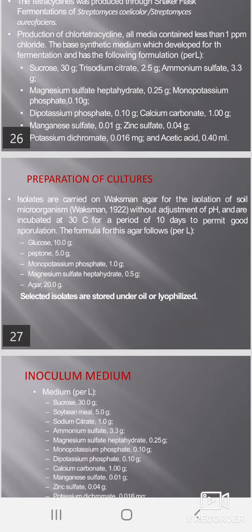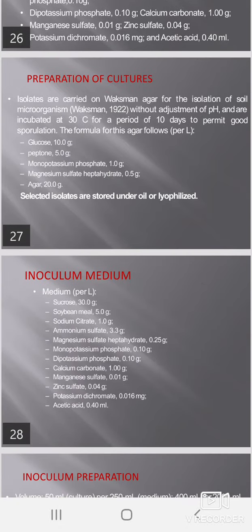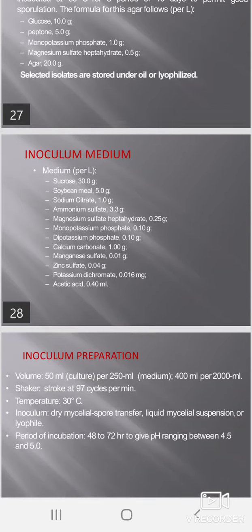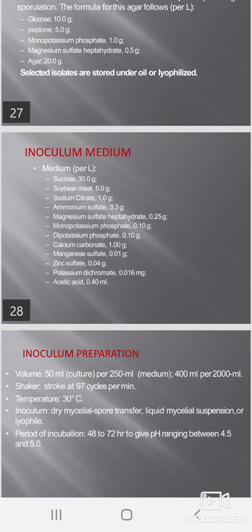Inoculum medium formulation: sucrose 30g, soybean meal 5g, sodium citrate 1g, ammonium sulfate 3.3g, magnesium sulfate heptahydrate 0.25g, monopotassium phosphate 0.1g, dipotassium phosphate 0.10g, calcium carbonate 1g, magnesium sulfate 0.01g, zinc sulfate 0.04g, potassium dichromate 0.01mg, acetic acid 0.4ml. Inoculum preparation volume: 50ml per 100ml flask or 200ml per larger flask.